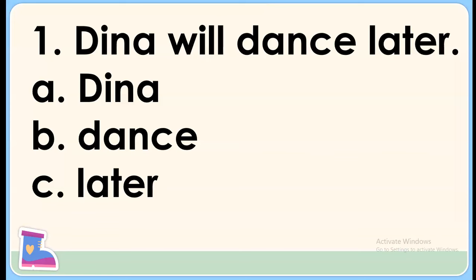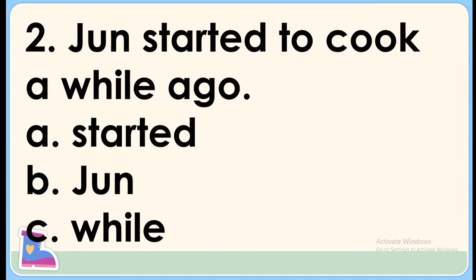Now, let's have the following exercise for us to identify nouns in sentences. Number one: Dina will dance later. The noun here is Dina. Number two: June started to cook a while ago. The noun here is June.